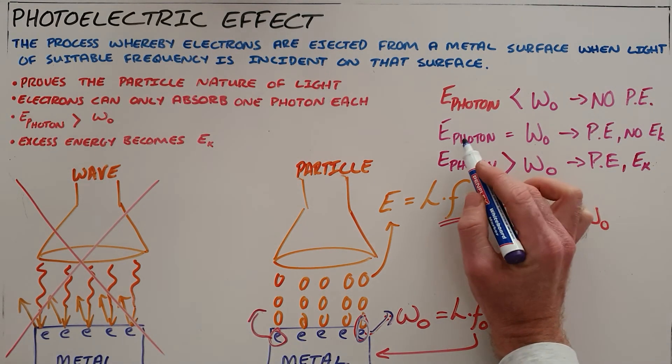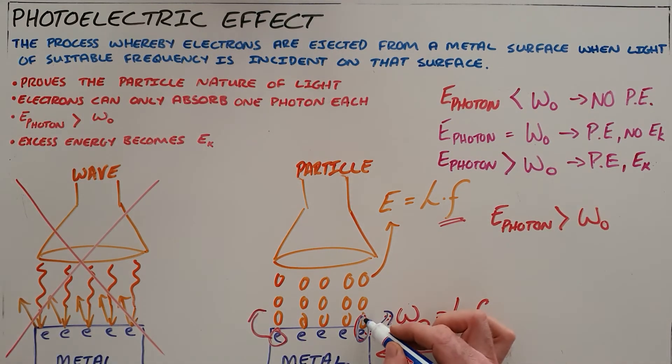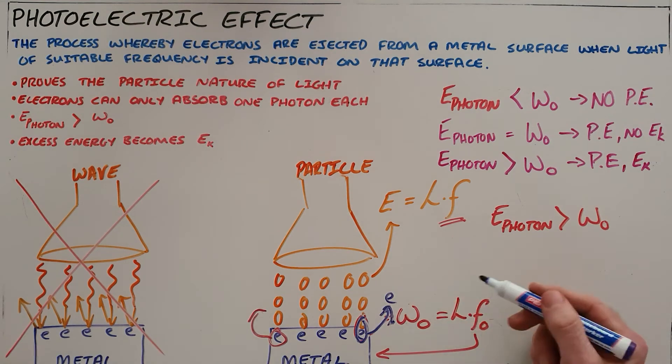The second option is that if the energy of the photon is equal to the work function, then what that means is it's just enough energy for an electron to absorb and escape from the surface, but not enough energy for it to move away from the surface because it has no additional kinetic energy.